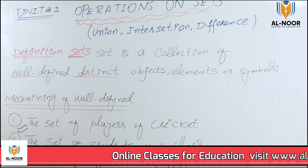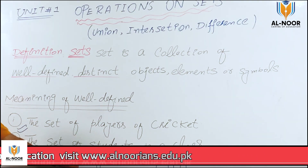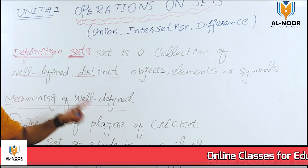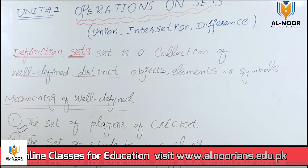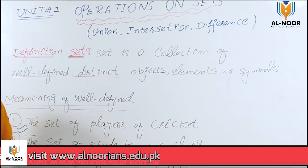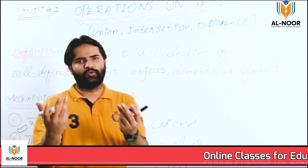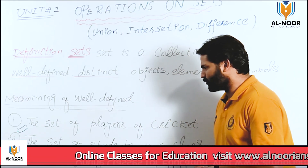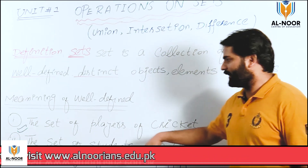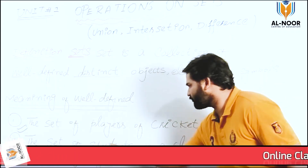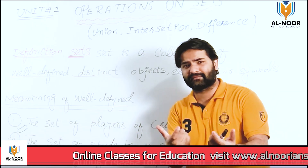لیکن اس example کا well-defined نہ ہونا کیسے ہوگا؟ فرض کریں میں یہاں لکھتا ہوں: the set of bad students in a class — یہ well-defined نہیں ہے۔ کیونکہ میرے نظروں میں bad student اور ہوں گے، اور کسی اور teacher کی نظروں میں bad student کا image بالکل مختلف ہو سکتا ہے۔ It means some specific students have a bad characteristic or a bad quality.